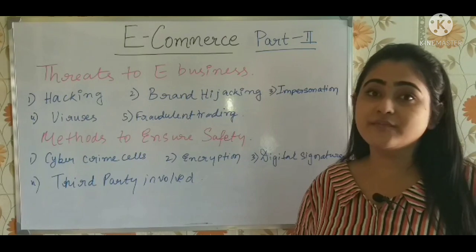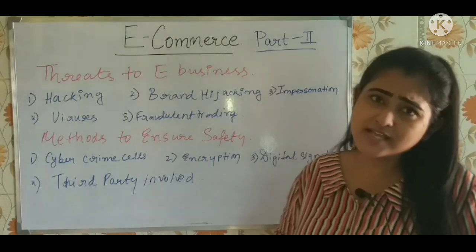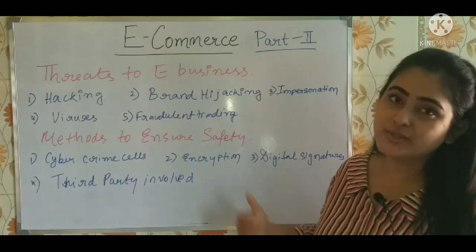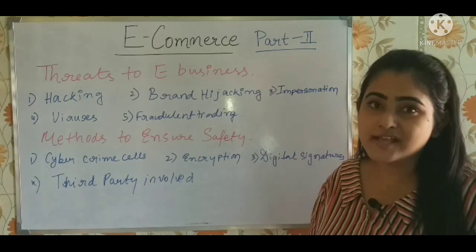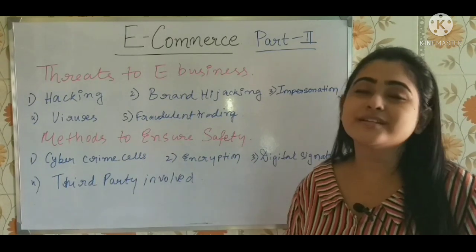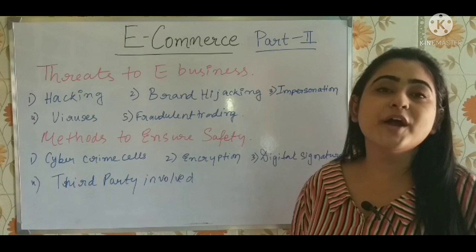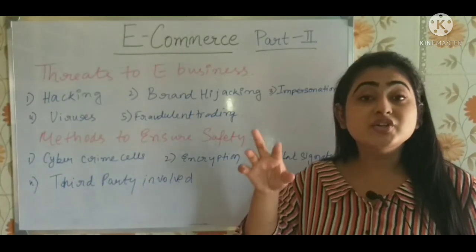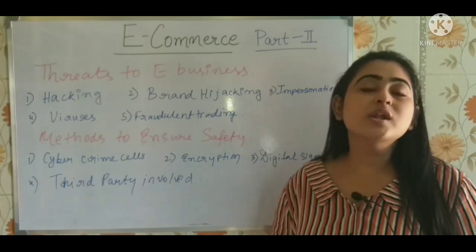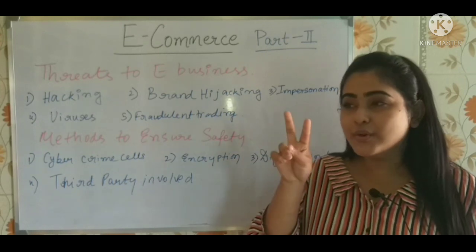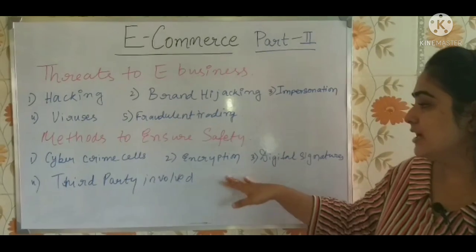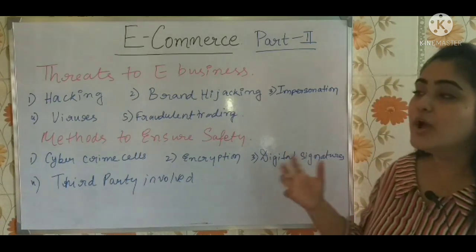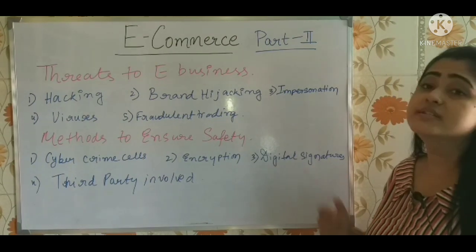Now let's look at the methods to ensure safety in e-business. There are many threats and risks, so there should definitely be methods to address them. First, cyber crime cells — do register and take the help of cyber crime cells if you are facing such problems. Second is encryption — encrypt your stored data and transactions into code, because code cannot be easily hacked. Third, use digital signatures — they are not easy to copy or hack, making transactions more secure.